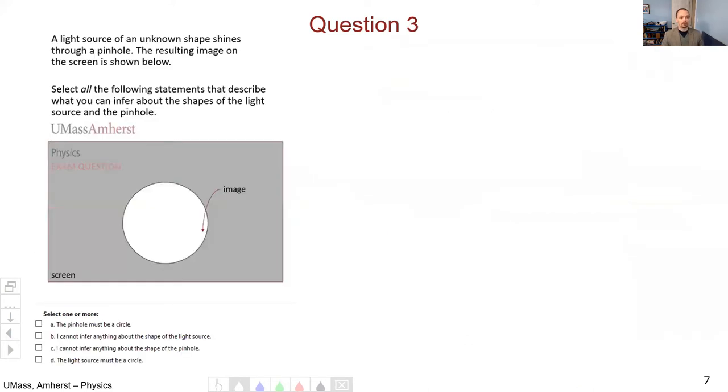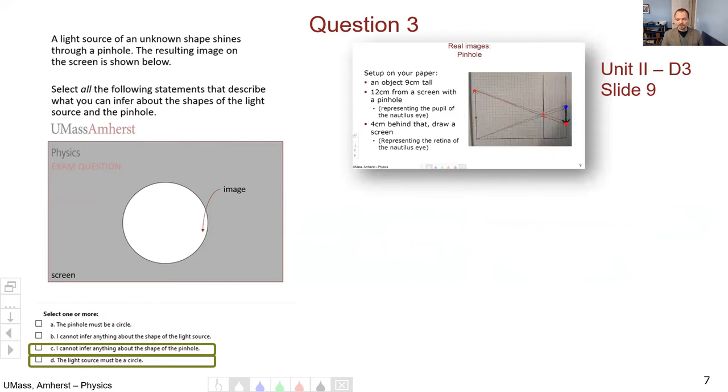Partial credit was given for these problems. If you got any one of them, you did get partial credit. Question number three was about a pinhole and asking what you could ascertain from the pinhole or the source of light just based upon the picture. You could determine that the source of light must be the shape that you see on the screen. Whatever shape was on the screen, that must be the shape of the light source. You can't tell anything about the pinhole - regardless of the pinhole shape, you will get the shape of the light source.